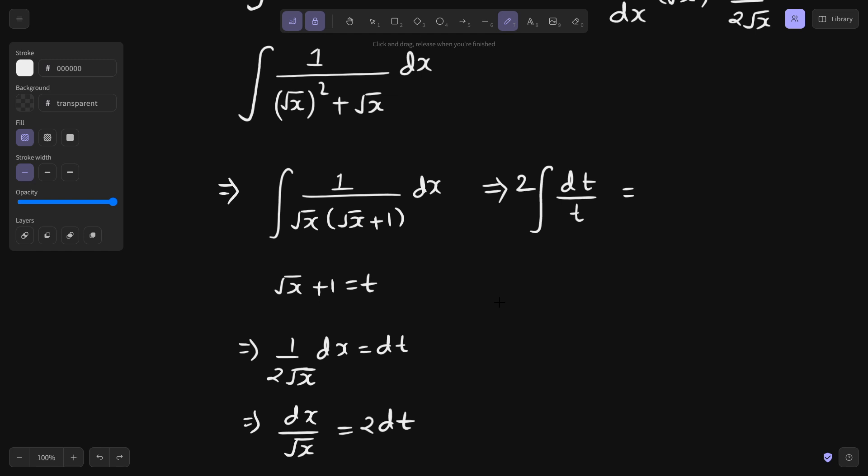dt by t integration is log mod t, and what was t? It was root x plus 1. So this is the final answer for this particular problem. This was not a difficult problem at all.